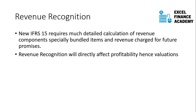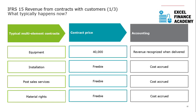For equipment purchases, you may have multiple components: the equipment itself, an installation cost, post-sales services, and material rights. Say the contract price is $40,000 and everything else — installation, service, other benefits — is given free. Previously, under the old standard, the company would recognize $40,000 as income and treat the rest as a cost, because those services were free.